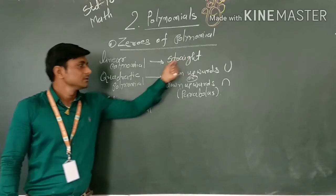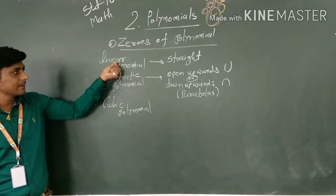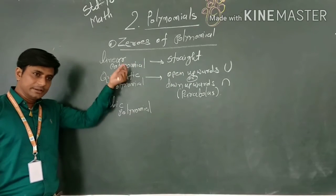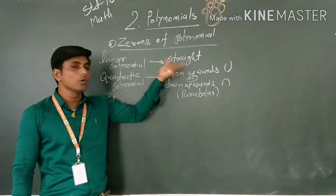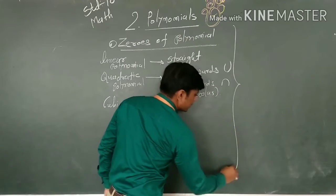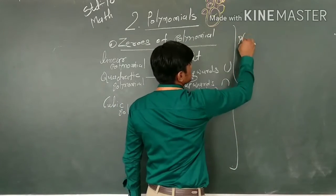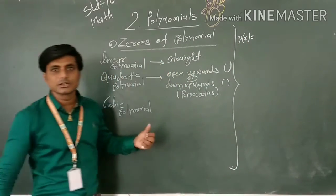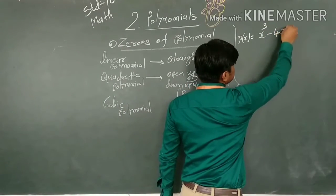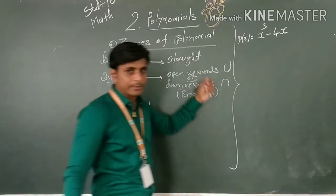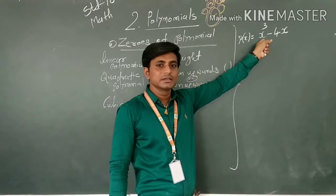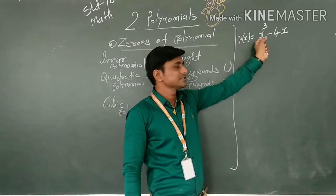Keep this in your mind — sometimes in a final exam, they ask us in MCQ as well as true or false questions about this. Now, let's take a cubic polynomial. Suppose we have P(x) = x³ − 4x. This is a cubic polynomial because the degree of this polynomial is 3. Therefore, this is a cubic polynomial.